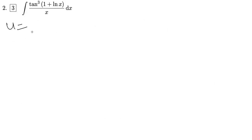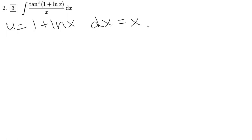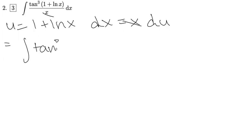If we let u equal to 1 plus the natural log of x, we get dx equal to x times du. And these will just cancel out, so we are left with the integral of tan cubed u du.